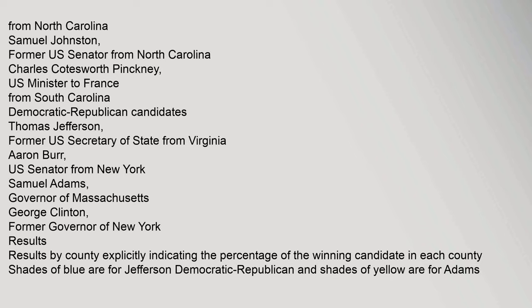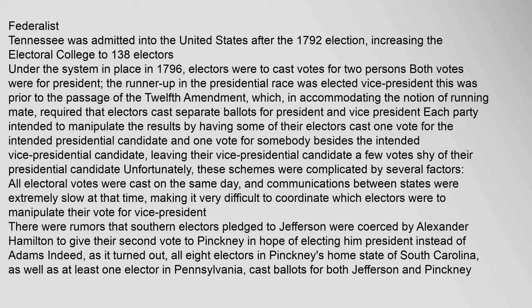Tennessee was admitted into the United States after the 1792 election, increasing the electoral college to 138 electors. Under the system in place in 1796, electors were to cast votes for two persons; both votes were for president, and the runner-up in the presidential race was elected vice president. This was prior to the passage of the Twelfth Amendment, which required that electors cast separate ballots for president and vice president. Each party intended to manipulate the results by having some of their electors cast one vote for the intended presidential candidate and one vote for somebody besides the intended vice presidential candidate. Unfortunately, these schemes were complicated by several factors: all electoral votes were cast on the same day, and communications between states were extremely slow, making it very difficult to coordinate which electors were to manipulate their vote for vice president.